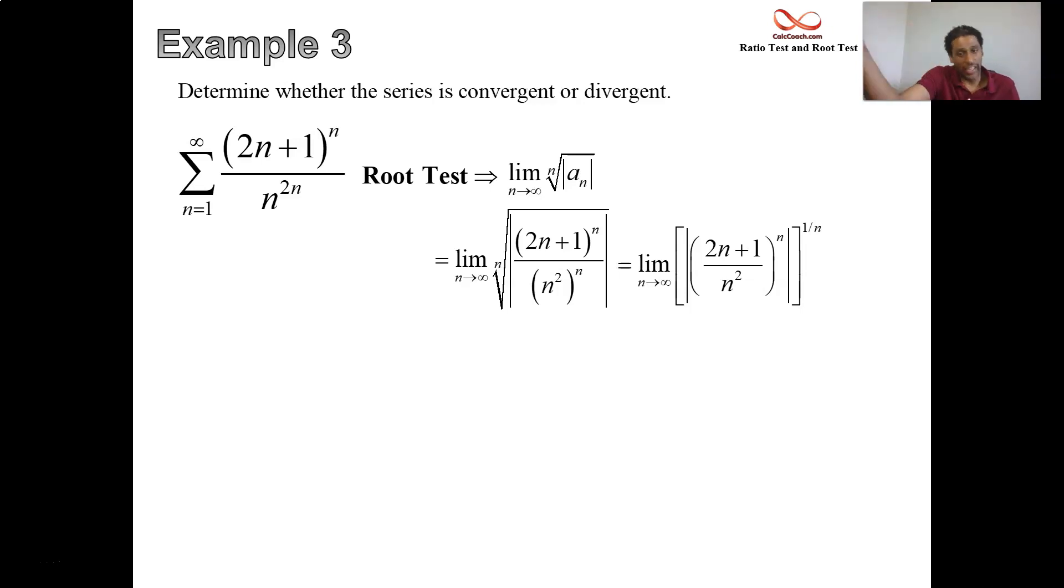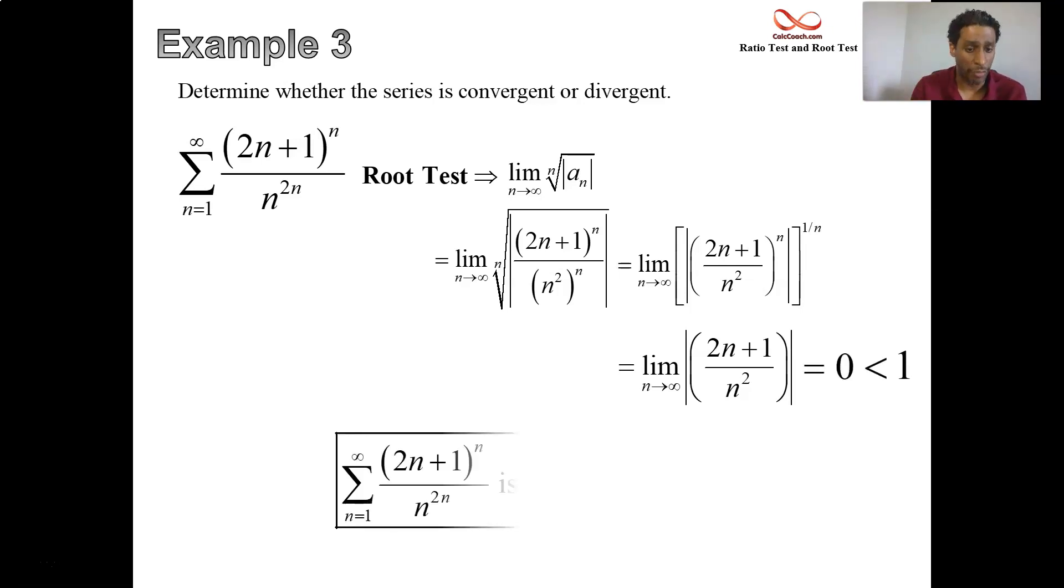Instead of using a radical symbol, we can use the fractional version of that exponent, which is 1 over n. The algebra is that you're going to cancel those exponents. It's built for that so that we can look at just 2n plus 1 divided by n squared. As n goes to infinity, the degree of the numerator is less than the degree of the denominator. This limit is an automatic 0, which is less than 1. And the root test is telling you that it's convergent.